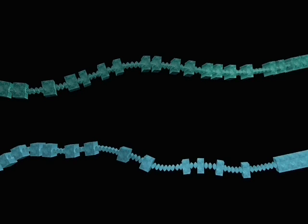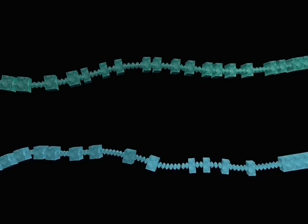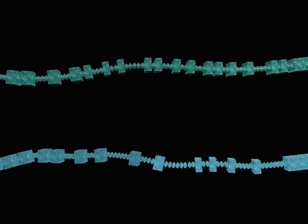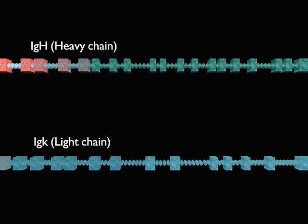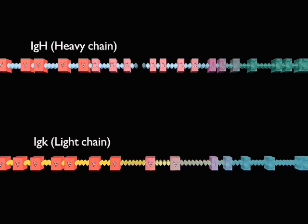Heavy and light chain genes are unusual because they undergo a process of recombination during B-cell development. The gene for the heavy chain, or light chain, is assembled from different gene segments by the recombination.